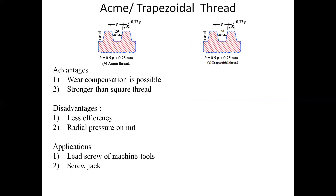There will definitely be questions based on this: in ACME threads, the included angle is 29 degrees, whereas in the trapezoidal thread, the included angle is 30 degrees. You may have a question asking which power thread profile has an included angle of 30 degrees — the answer should be the trapezoidal thread. There may also be a question where a figure is shown and you have to identify the thread profile. Such simple identification questions are also likely to be asked.